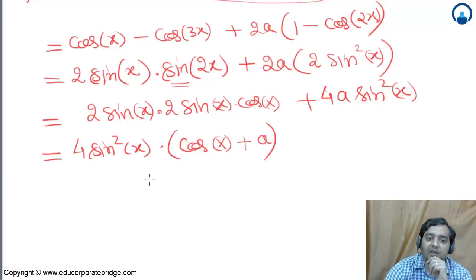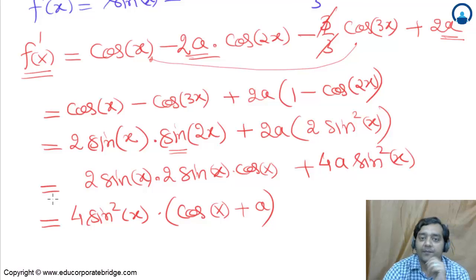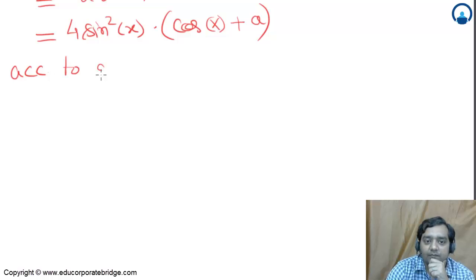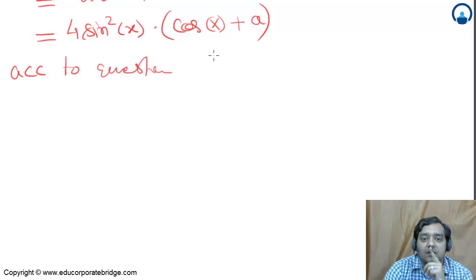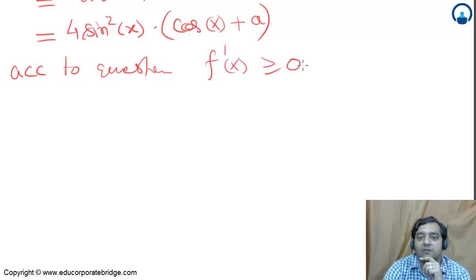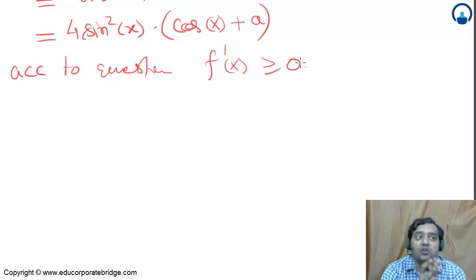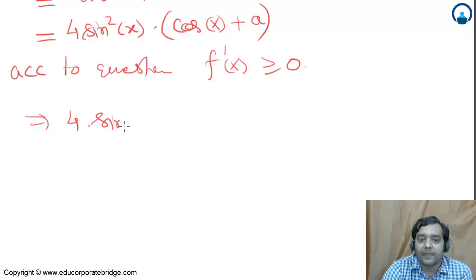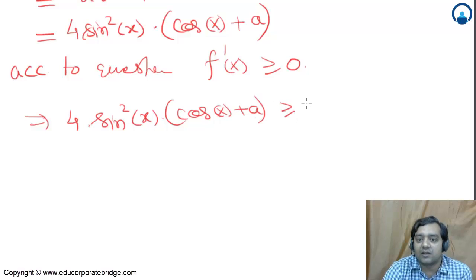We simplified f'(x) = 4 sin²x (cos x + a). For f to be monotonically increasing, f'(x) should be greater than or equal to 0 for all x. The factor sin²x is always non-negative — it's zero only at discrete points like π, 2π, etc., not over any interval. So we just need cos x + a ≥ 0 always.